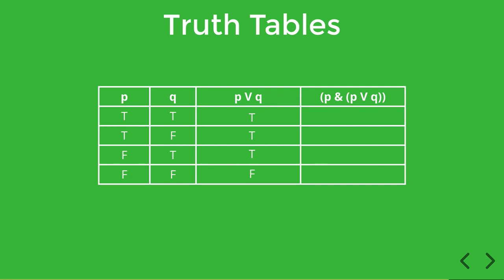So now that we've calculated the value for P or Q, we can go ahead and calculate P and P or Q. So how do we do this? Well, we have to apply the rules for the truth table for conjunction, but this time the inputs are P on the one hand and P or Q on the other. So we're going to be looking at the values in columns one and column three.